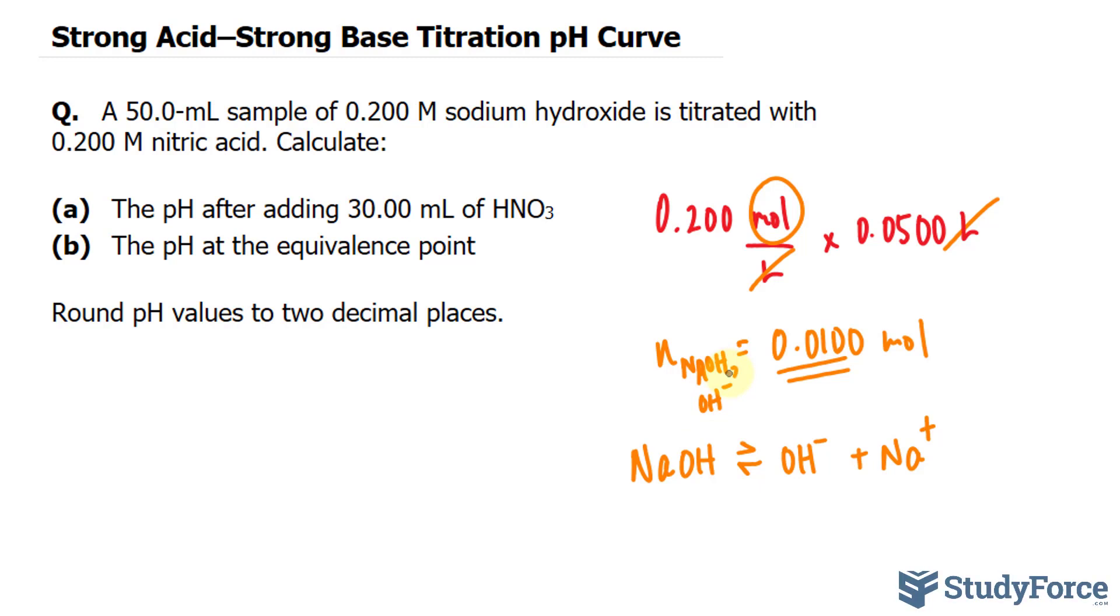The next thing that I want to do is calculate the amount of HNO3 in moles. And to do that, I'll take the amount given here, the volume in liters, 0.0300 liters, and multiply it to its concentration of 0.200.